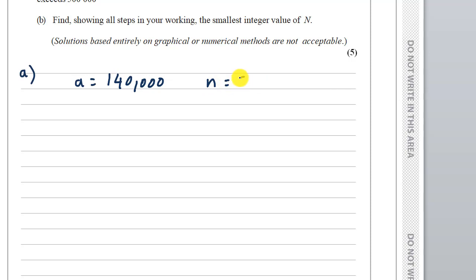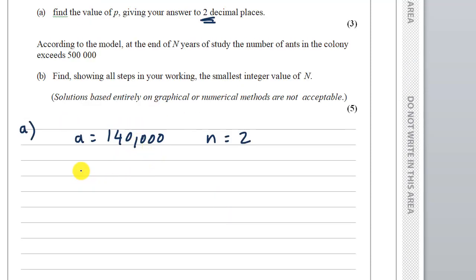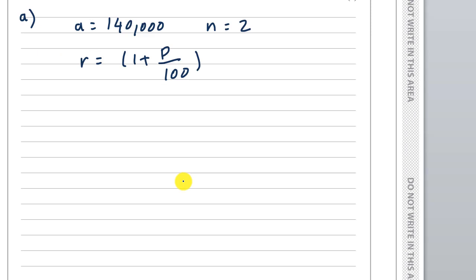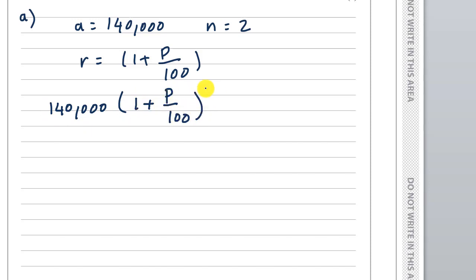N is equal to 2. R is equal to 1 plus B divided by 100. So we have 140,000 multiplied by (1 plus B divided by 100) to the power 2, equal to 150,000.